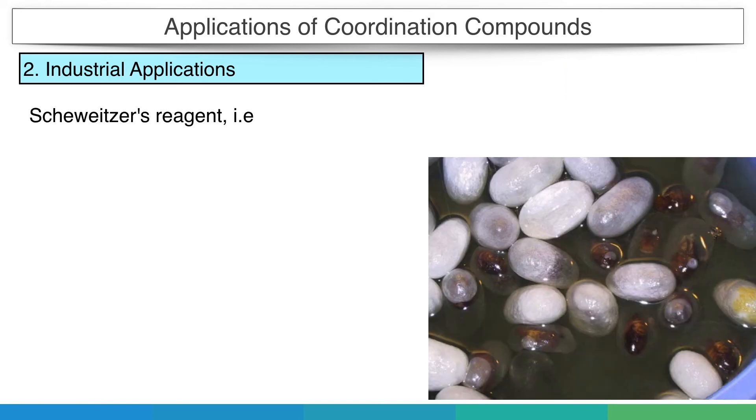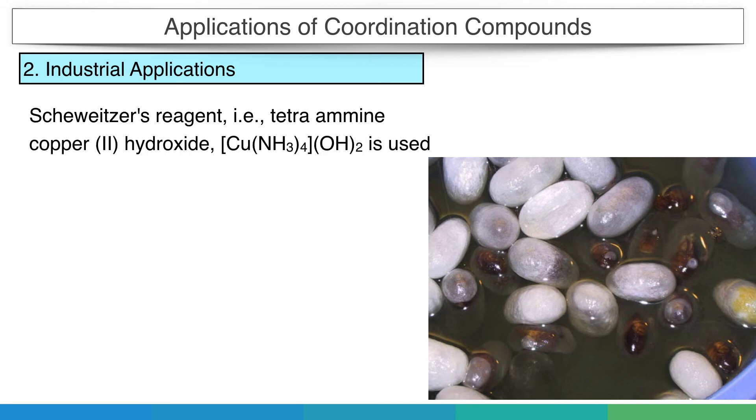Schweitzer's reagent, i.e. tetraamine copper hydroxide, is used as a solvent for cellulose during the manufacture of artificial silk.